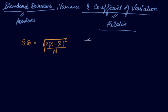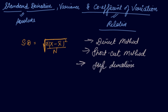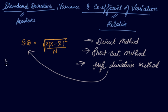There are three different methods to calculate standard deviation: the direct method, the indirect method (also called the shortcut method), and the step deviation method. These methods apply to the individual series.